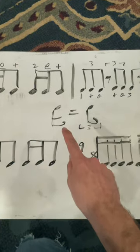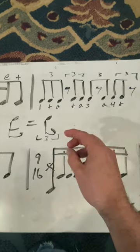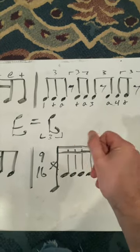Then we're going to do a metric modulation that says 16th note equals 8th triplets and it's going to turn into this rhythm. So we have 1 and a, 2 and a 3, a 4 and.